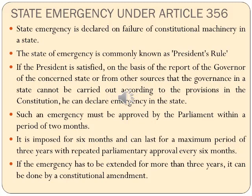The Legislative Assembly of the State can be dissolved or may remain in suspended position. The Parliament makes laws on the 66 subjects of the State List, similar to the National Emergency, and all money bills have to be referred to the Parliament for approval. Ministers of the State Legislature are not allowed to perform any action in the state and are deemed not valid.